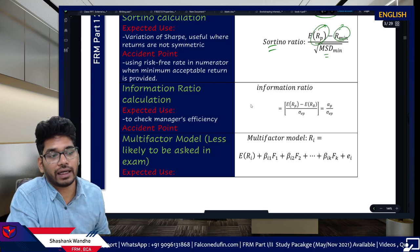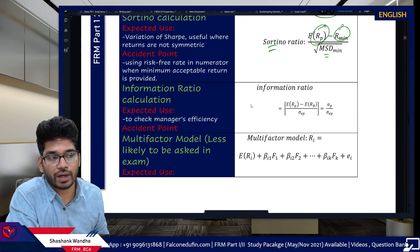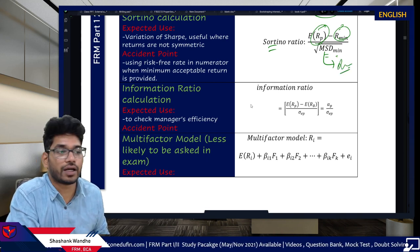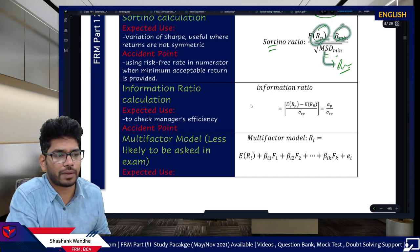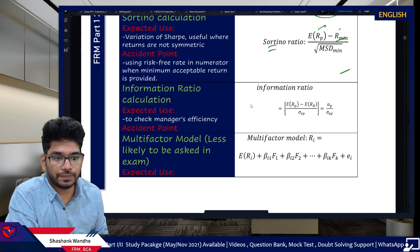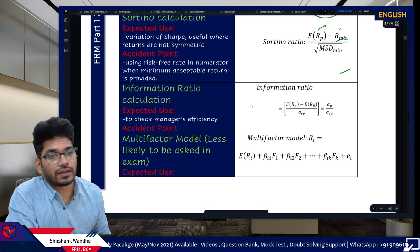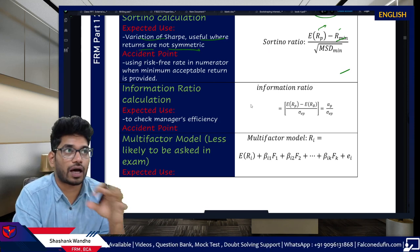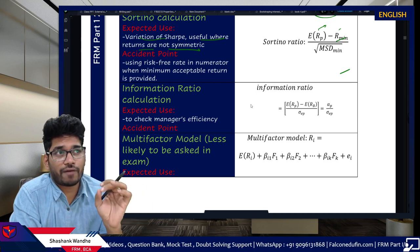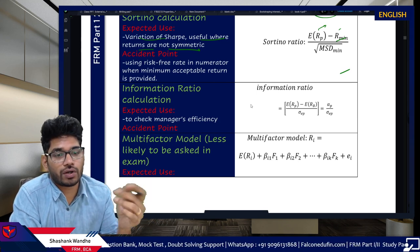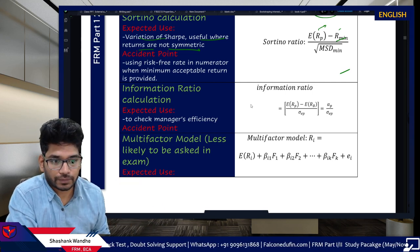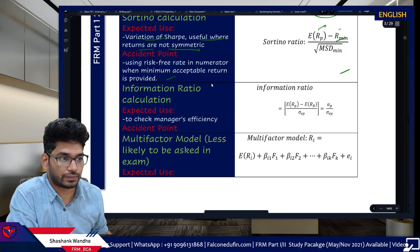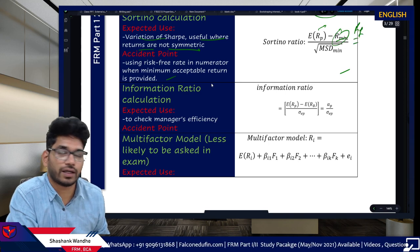The Sortino ratio formula: (ERP minus R minimum) divided by the square root of MSD (mean squared deviation, minimum). All this information is directly provided — just take the square root and plug into the formula. The Sortino ratio is a variation of the Sharpe ratio, useful when returns are not symmetric. Key accent point: do not use RF here — use R minimum.